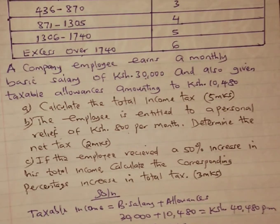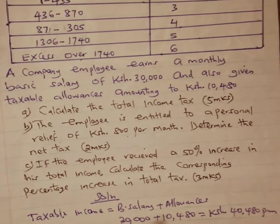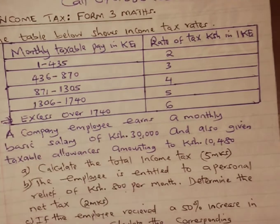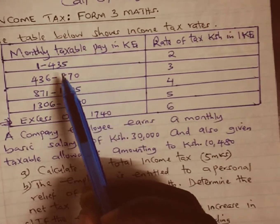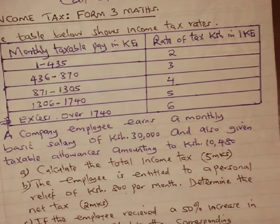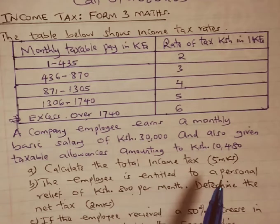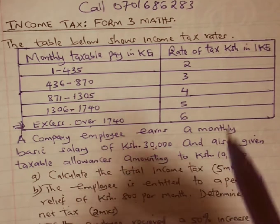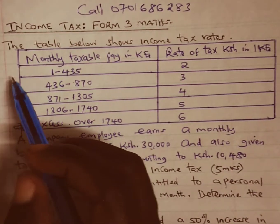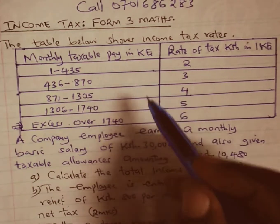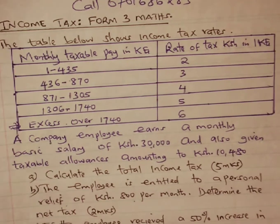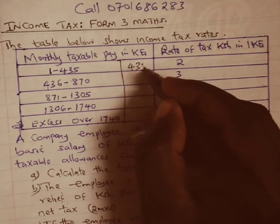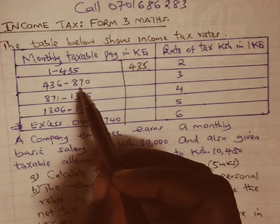Our value of 2,024 lies in the last bracket, so we will tax this amount across five brackets. Before calculating the tax, let us find the amount to be taxed in each bracket. We tax the maximums: in the first bracket, the maximum is 435, so we tax 435. For the second bracket, we take 870 minus 435, giving us 435.